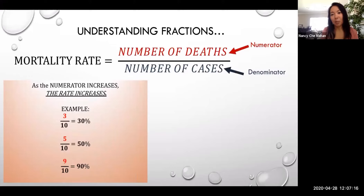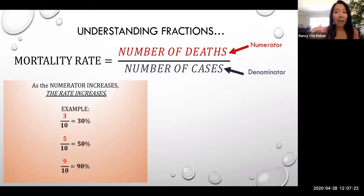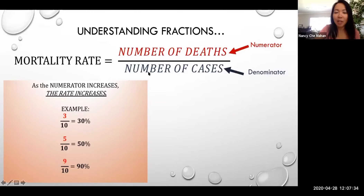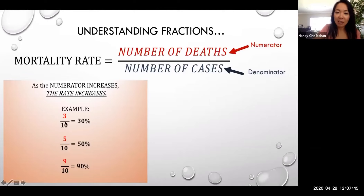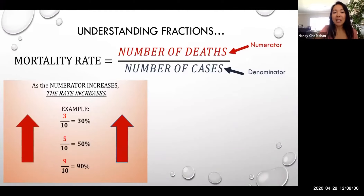Now let's understand fractions a little bit. The numerator is the number of deaths, and the denominator is the number of cases. Every single day these numbers are shooting up — what does that do to the mortality rate? Let's understand what happens when the numerator increases. If you start off with a numerator of 3 over 10, you get 30%. If you increase the numerator to 5, the rate increases to 50%. When you increase it to 9, it increases to 90%. So as the numerator increases, the rate increases — in other words, as the number of deaths increases, the mortality rate increases.